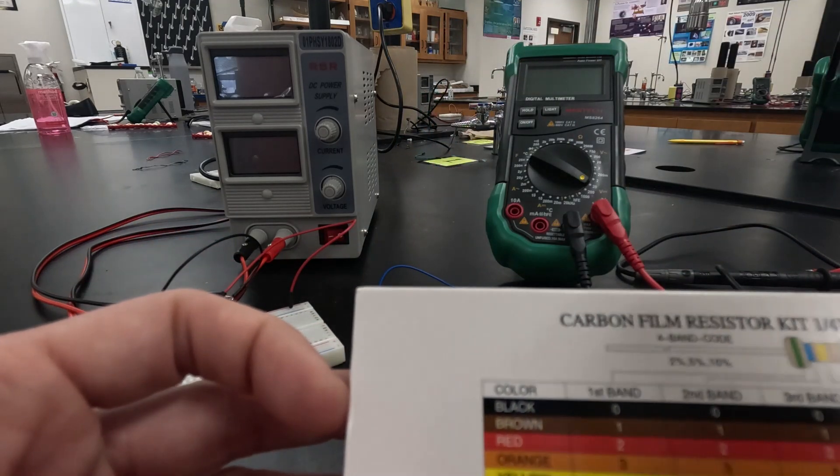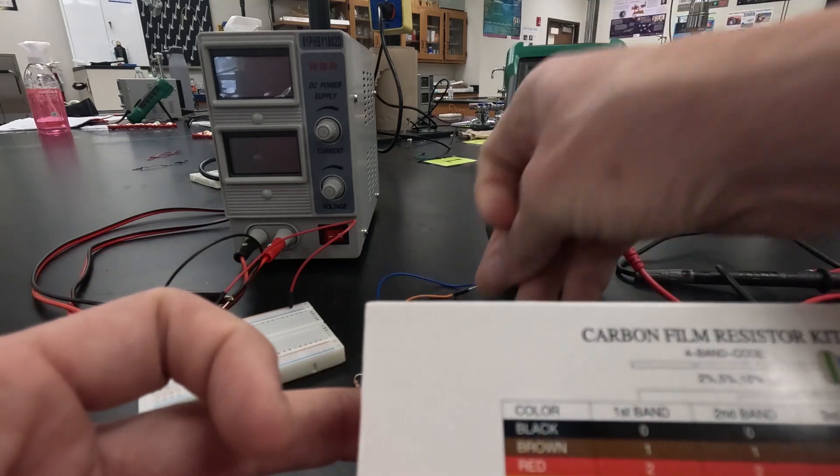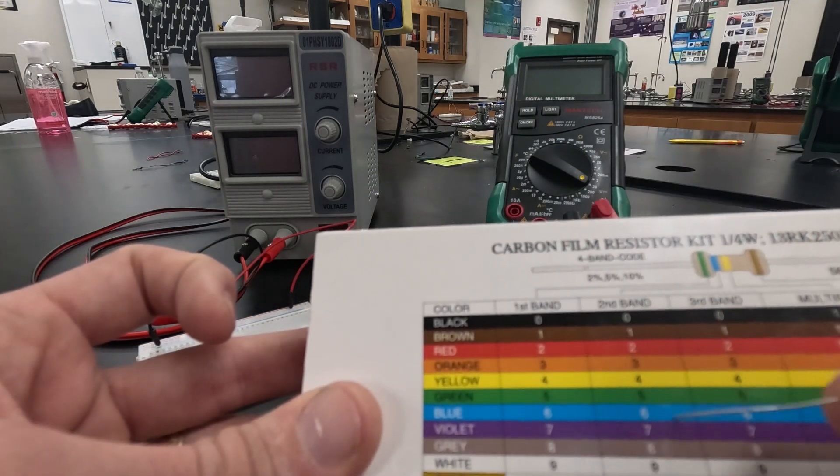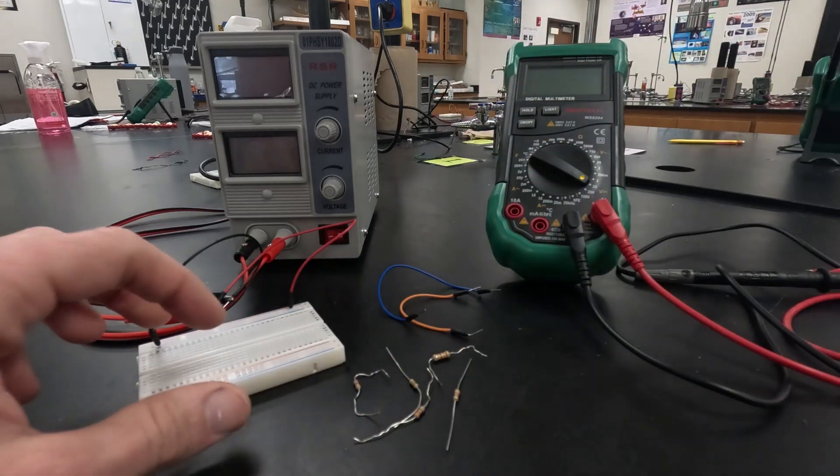Next is a 330 which is going to be orange, orange, brown. And finally we have a 470 which is going to be yellow, purple, brown. So that's our 470 here. We have those five resistors.